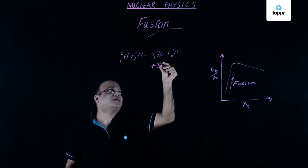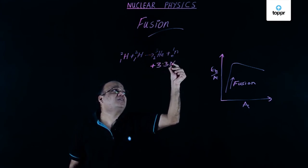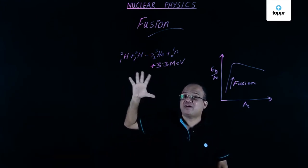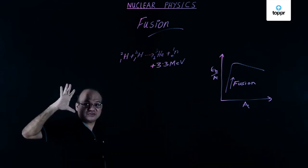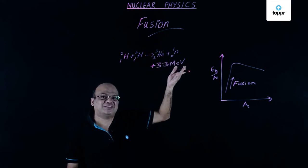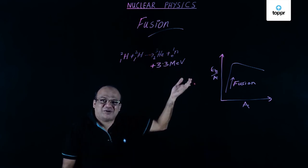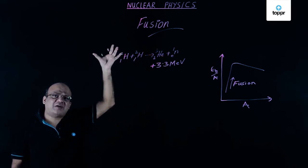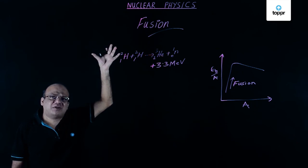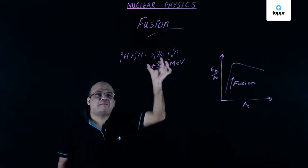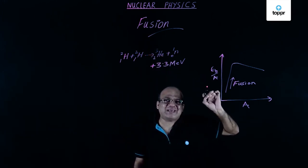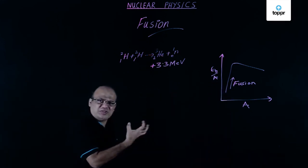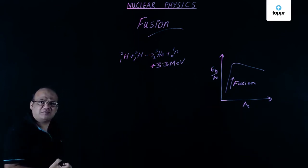In this reaction we get 3.3 MeV of energy. You may think that is less compared to the 200 MeV from fission, but look at the mass of the deuterium nuclei and compare it with the mass of uranium-235 that underwent fission. The energy released per unit mass in fusion is actually more than the energy released per unit mass in fission.